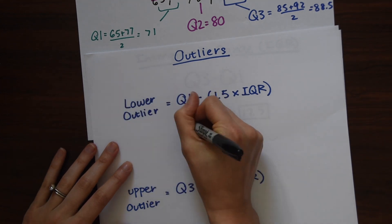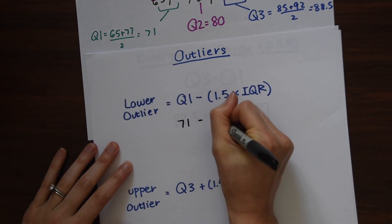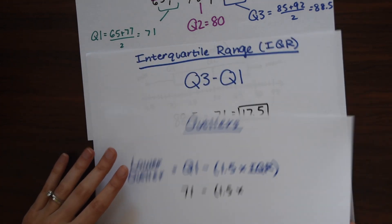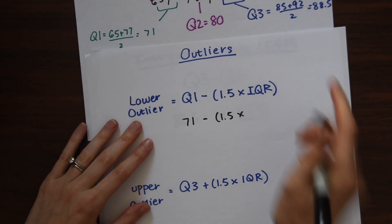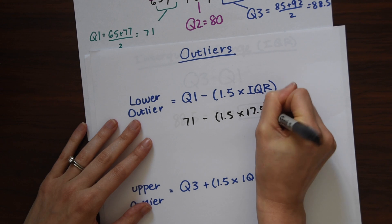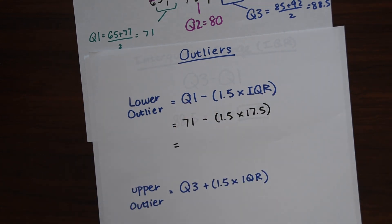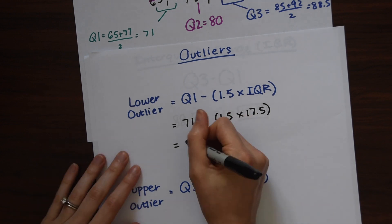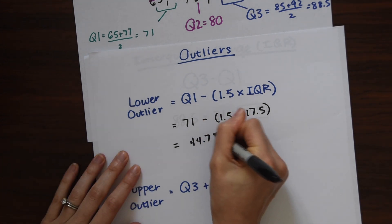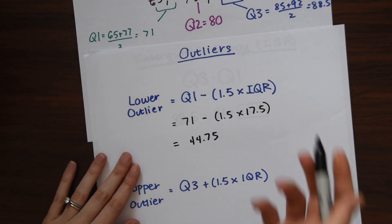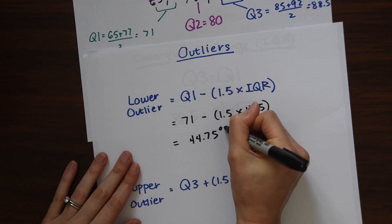So we could fill this in. So quartile 1 is 71 minus 1.5 times the interquartile range which we just got, 17.5. So if we just plug this into our calculator, we get 44.75. So remember these represent temperatures. We really get 44.75 degrees Fahrenheit.